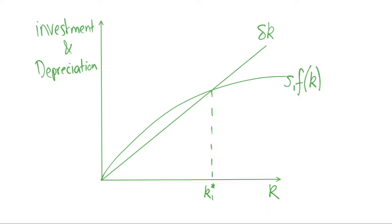As you can see we've got the standard diagram we've been using throughout this series with s1 f(k) as our investment function and our depreciation function sigma k. Where they meet that is our steady state, so investment equals depreciation and our capital stock stays at k1 star in the long run.